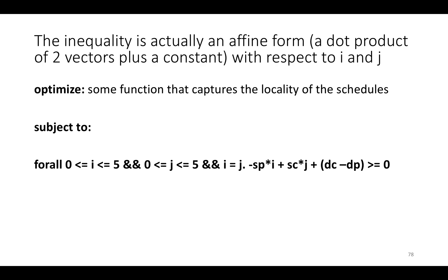If we just reorganize things a little bit, we can rewrite this whole expression as minus sp times i plus sc times j plus, in parentheses, dc minus dp. Now this is actually an affine expression in the quantified variables i and j if you think of these guys as constants that we're going to select.